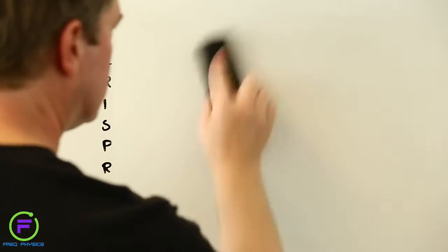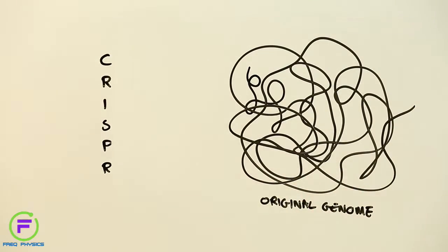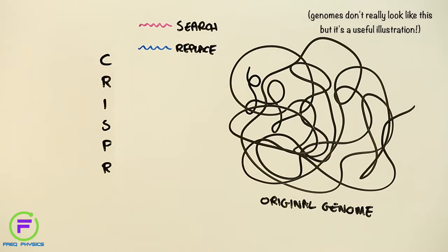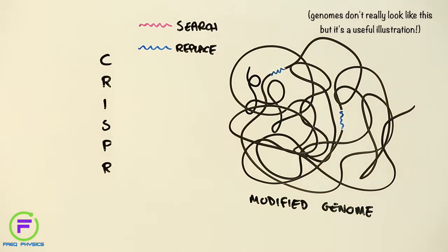It's essentially a sophisticated biological search and replace technology that allows scientists to easily modify the genetic traits of an organism, such as replacing the parts of a mosquito's genome that allows it to host malaria-causing parasites, for instance.